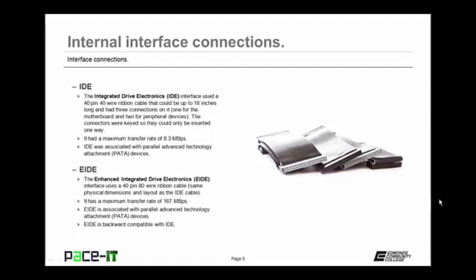Now let's move on to SATA, Serial Advanced Technology Attachment — the interface replacing IDE/EIDE in today's motherboards. It uses a 7-wire, 7-pin cable with an L-shape, meaning it's a keyed connector that can only be installed one way. This cable can be up to one meter in length. Unlike IDE and EIDE, only one SATA device is allowed per cable, but all SATA devices are hot-swappable. SATA comes in three versions: SATA 1 with a maximum of 1.5 gigabits per second, SATA 2 with 3.0 gigabits per second, and SATA 3 with 6 gigabits per second.